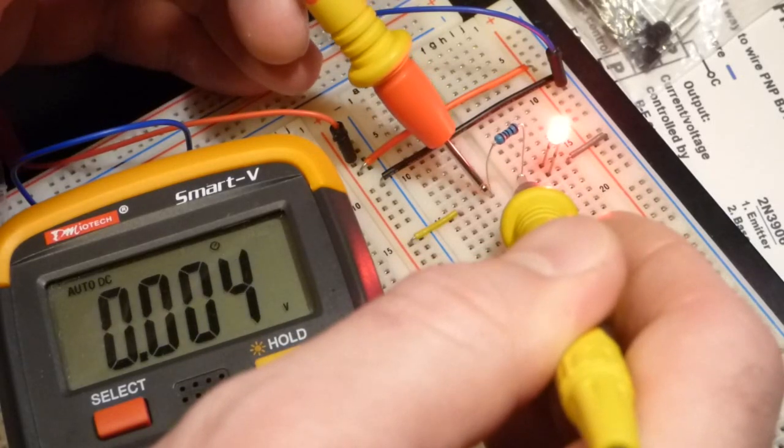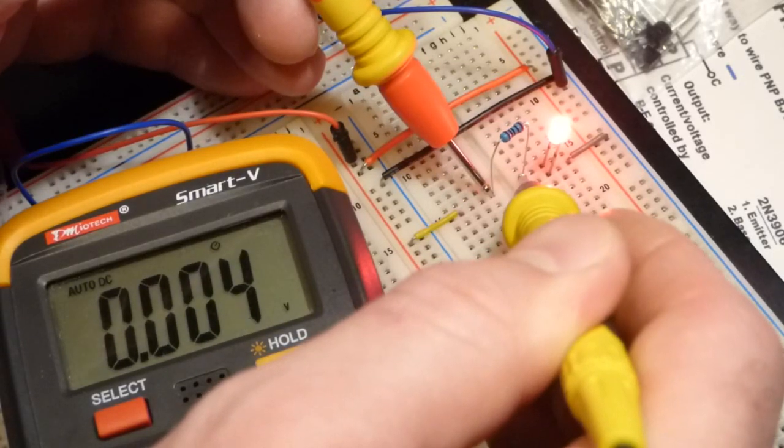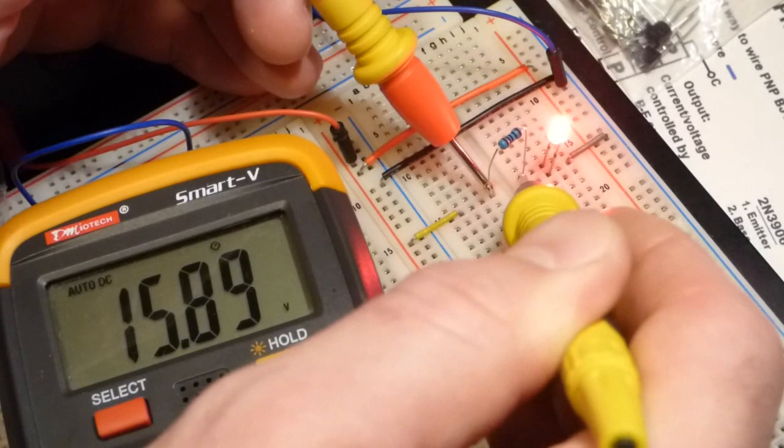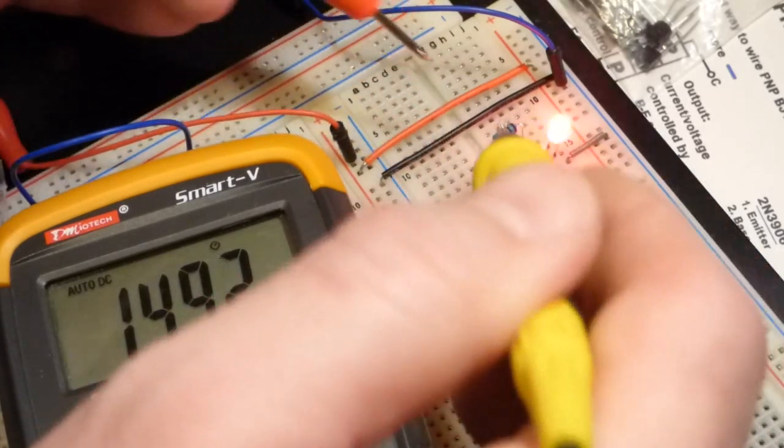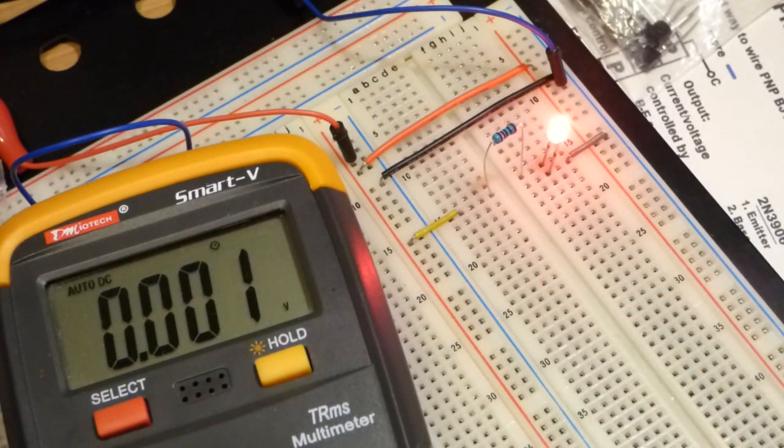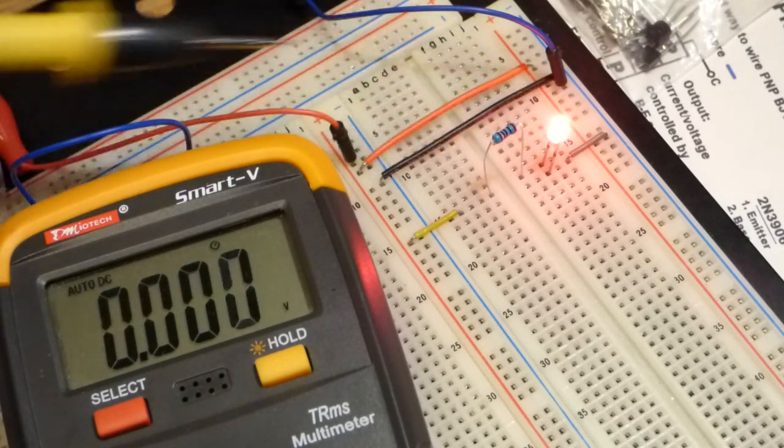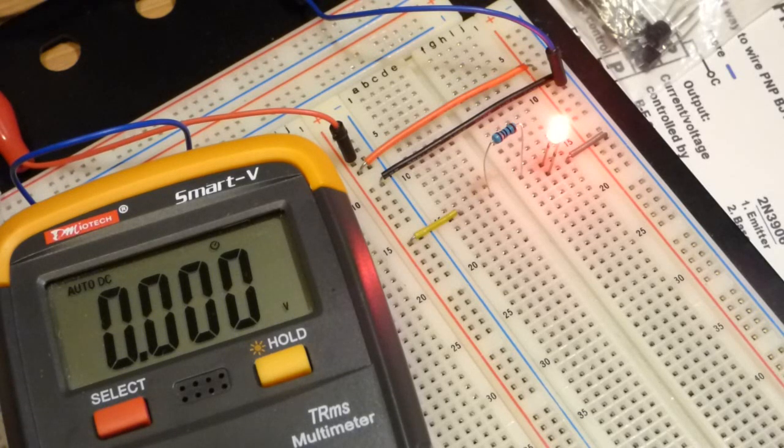But we don't have 20 milliamps of current going through here because we only have about 16 volts across it, so it's about 16 milliamps. So if I could raise the voltage even more or use a lower value resistor of course, then the current would go up a little bit more and the LED would block a little bit more voltage. But you get the point.